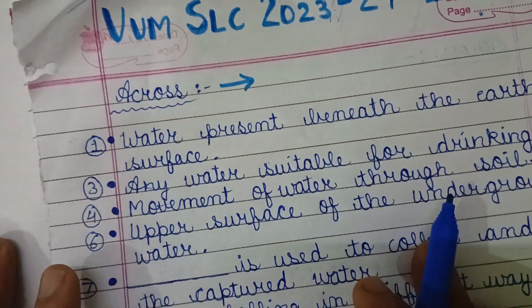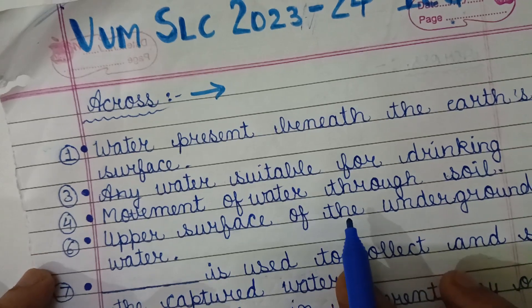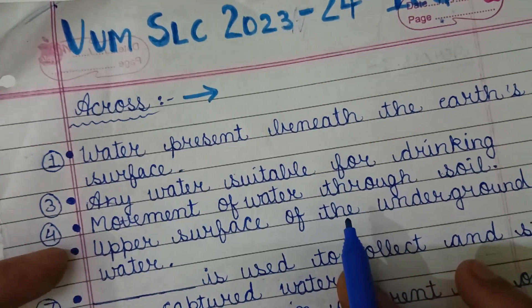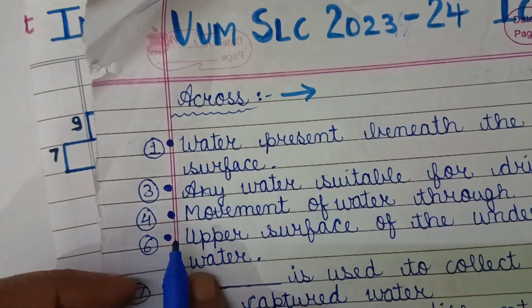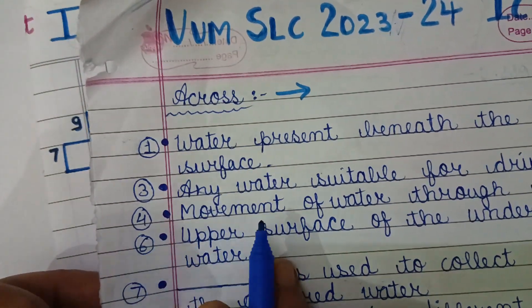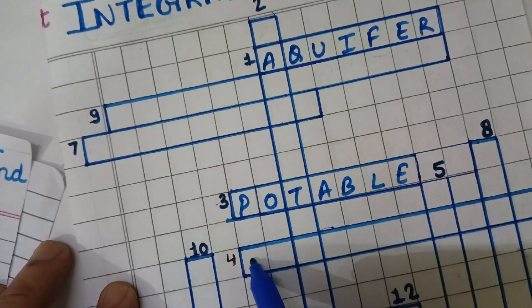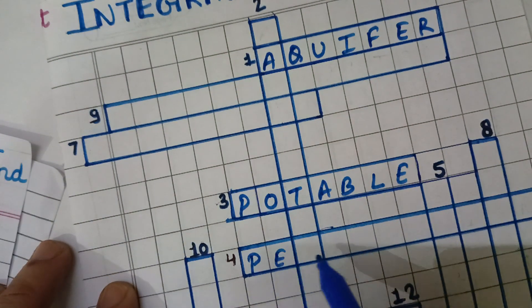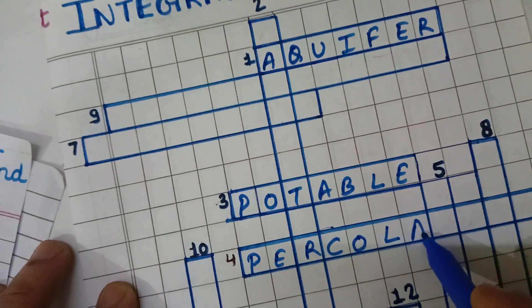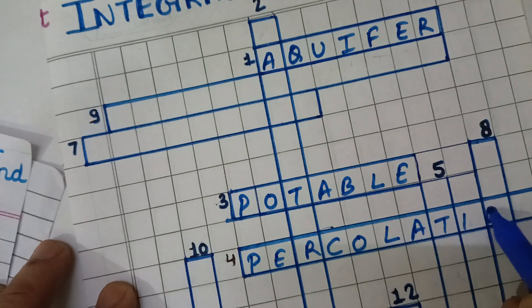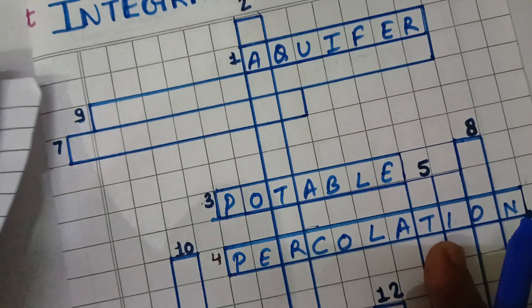Next: movement of water through soil is known as percolation. This is in fourth across — P-E-R-C-O-L-A-T-I-O-N — percolation.